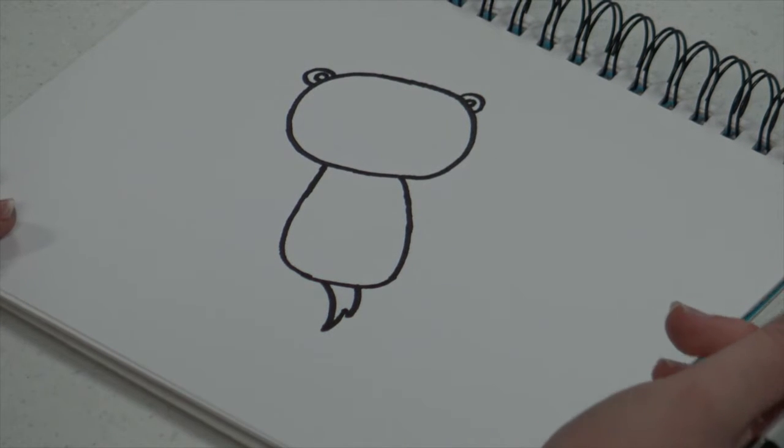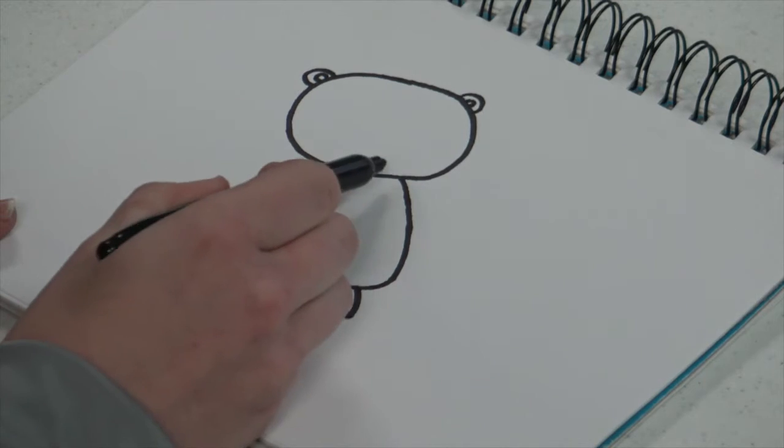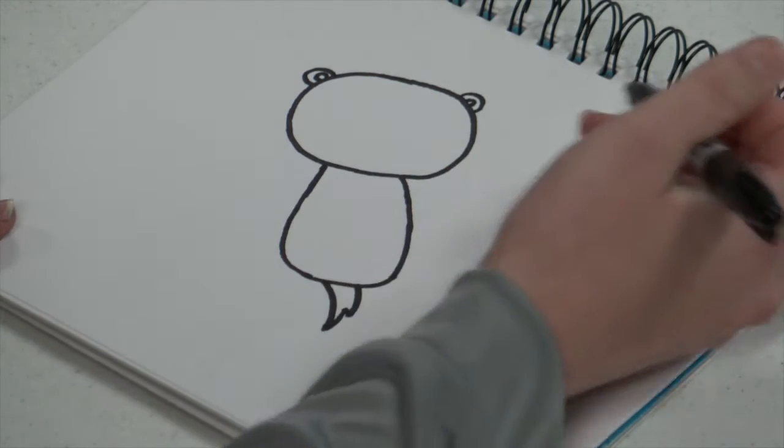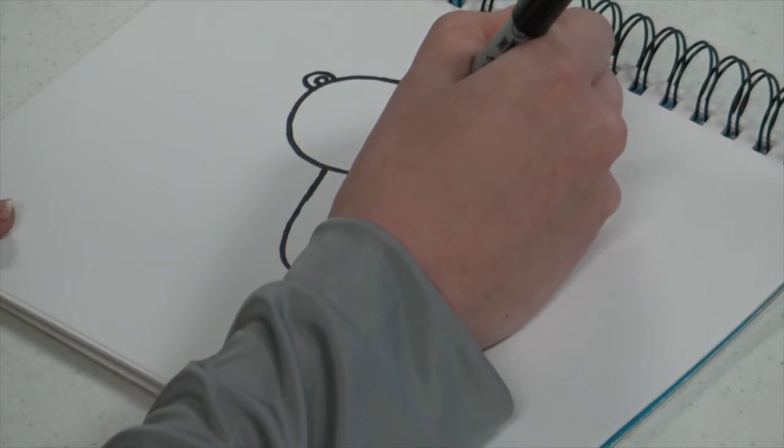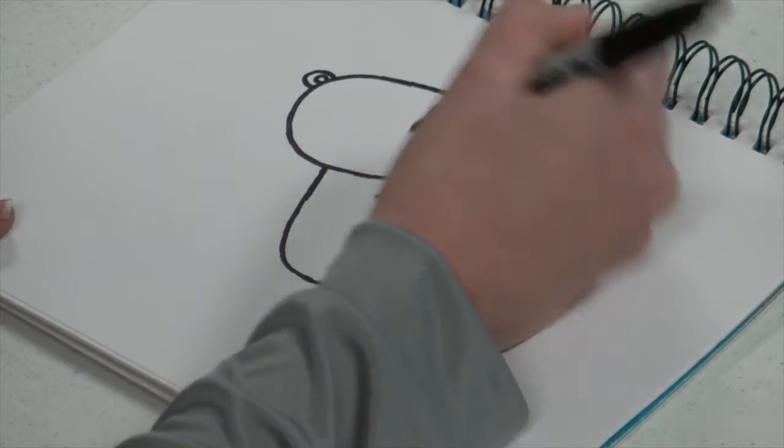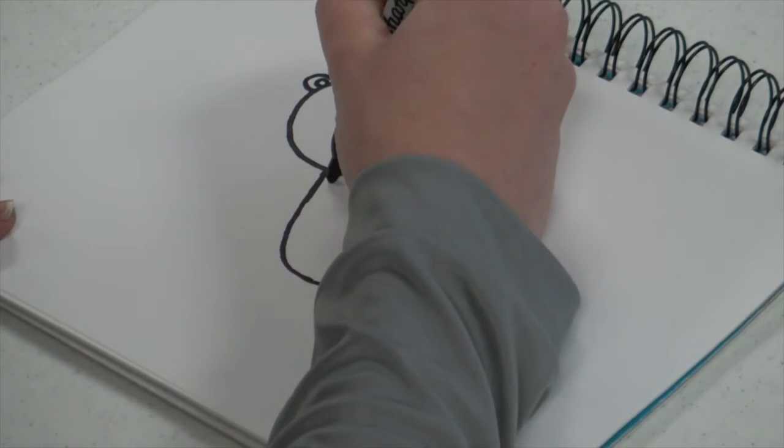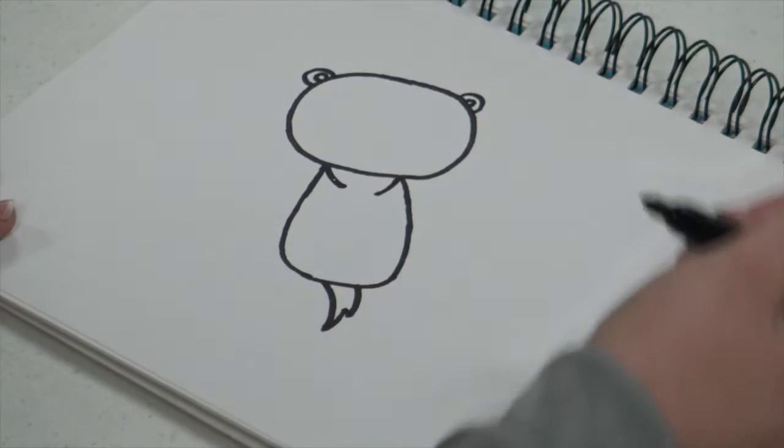Then we're gonna make the arms. So you want to start at the corner where the body joins the head and make a loop down and do that on both sides.